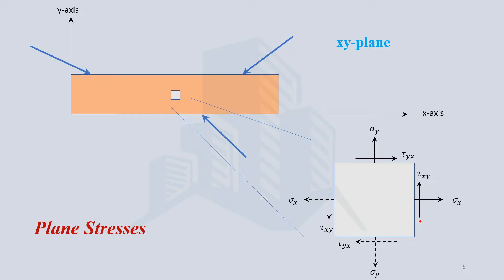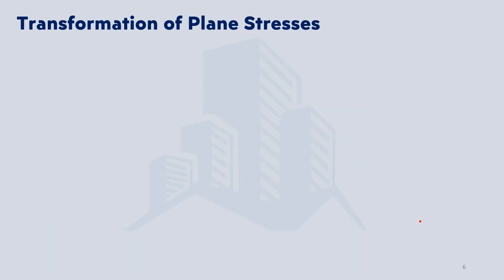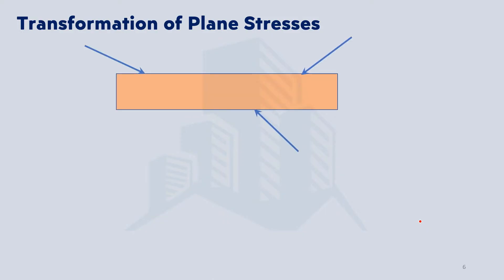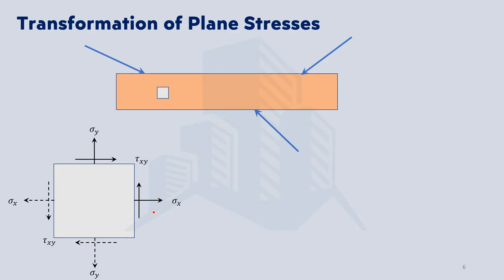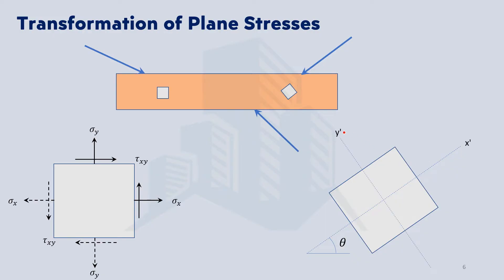The next important topic is transformation of plane stresses. Considering the same object subjected to forces, if we know the stresses at one horizontal plane and we want to know the stresses on a plane inclined at some angle, this can be calculated from the known stresses. By rotating the element to any other direction by angle theta, we can calculate the plane stresses on that inclined plane.